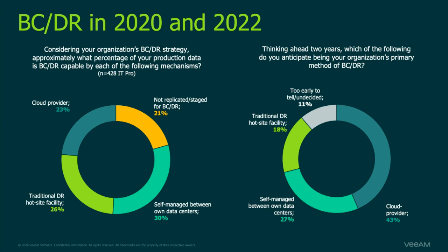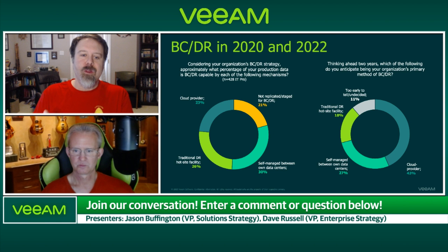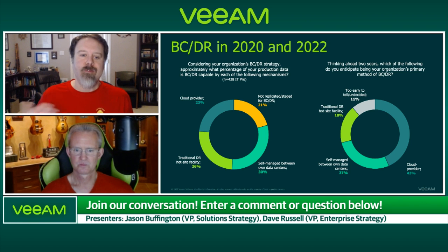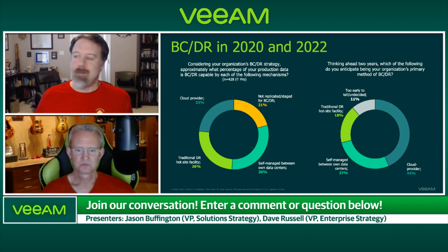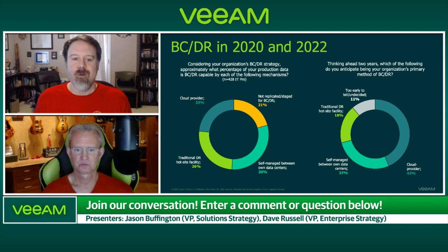If we move forward to 2022 — Helen, this one's for you. A cloud provider goes from 23% up to 43%. Traditional hot site goes down, self-managed goes down. The meta answer is that as cloud and hybrid become so much more interchangeable and intertwined with the user experience, the only things left are orchestration and a great service provider. With those two things, DRaaS becomes really, really compelling. The data proves that at least 1,500 other organizations think the same way.